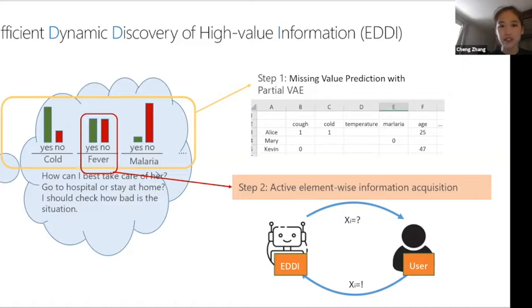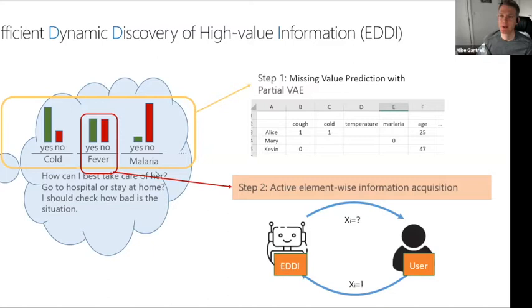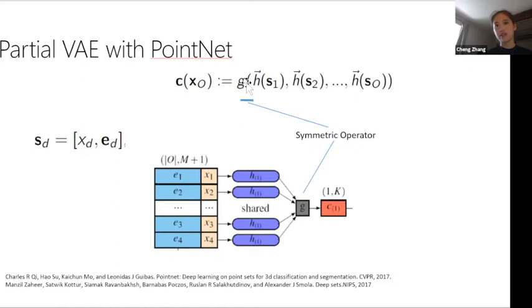Question: what if the size of the input is different for the partial VAE? That's exactly the key point of the point net architecture. The symmetric operator — like summation — aggregates elements together regardless of input size. Three numbers or five numbers all sum to one number, so the symmetric operator can take set inputs of arbitrary size.